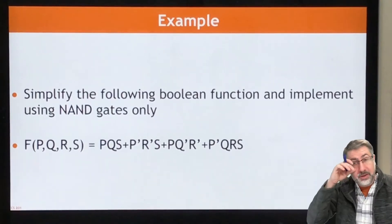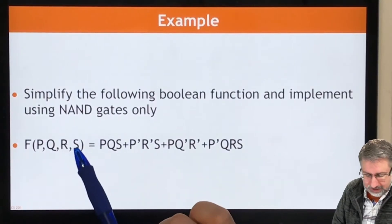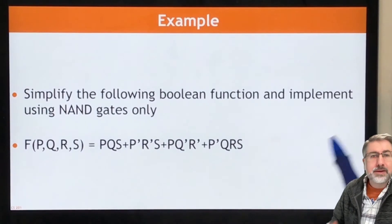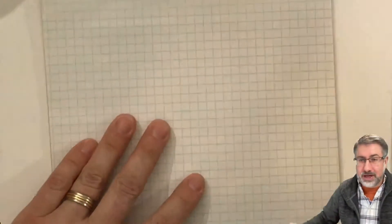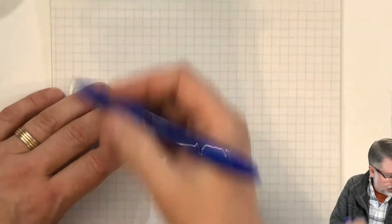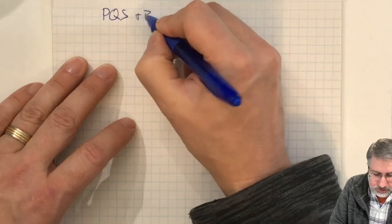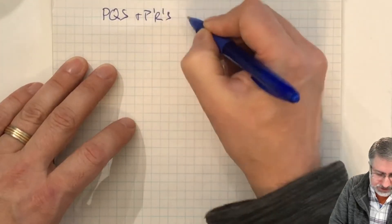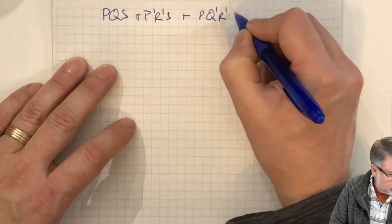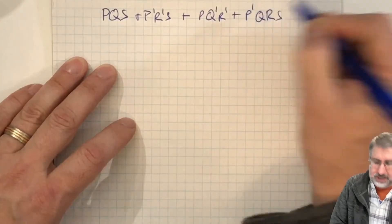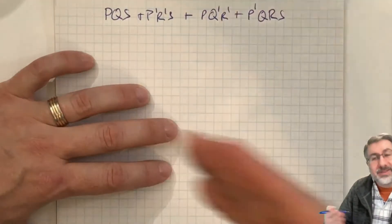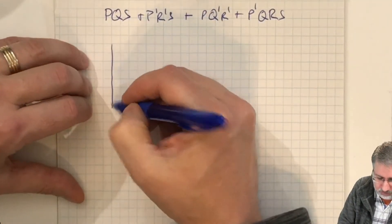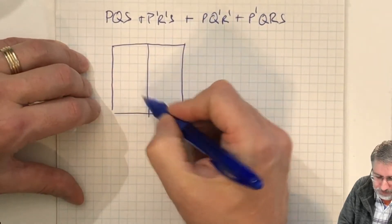Here's a worked example. Given the function with variables P, Q, R, and S, with AND terms and various inverters, simplify that function and implement it using NAND gates only. We're going to simplify it first. Since we've learned Karnaugh maps, it might be easiest to put this function into a K-map and then simplify as far as we can. We draw out the Karnaugh map and plot each of the terms.